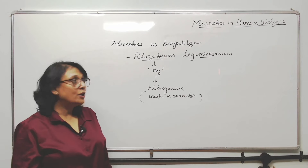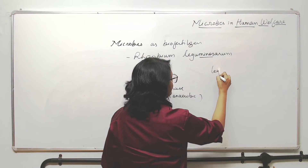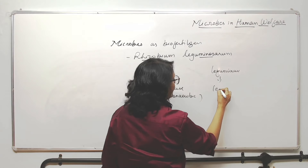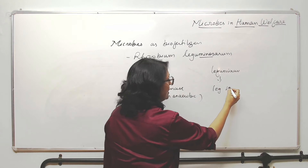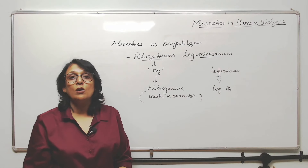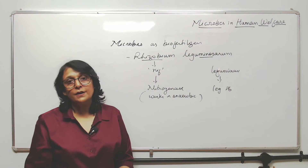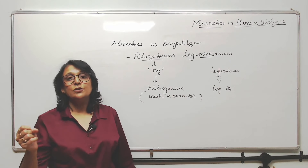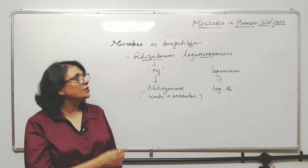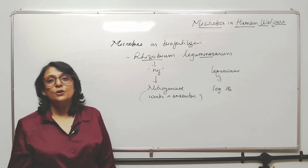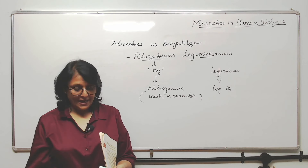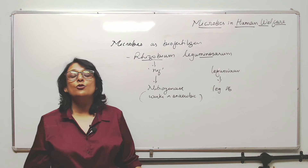The leguminous plant has leghemoglobin, which acts like an oxygen scavenger — it binds with oxygen wherever it is. By binding with oxygen it removes it, creating an anaerobic condition for the bacteria to work. This is a symbiotic association that helps in nitrogen fixation.